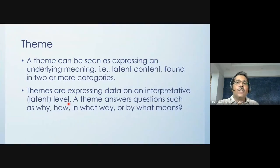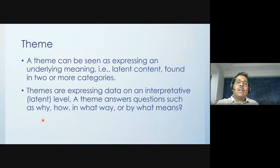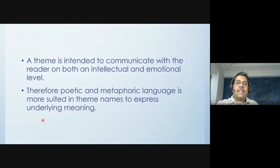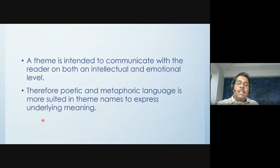Categories are internally homogenous and externally heterogeneous — they appear different on the surface but have an internal association. Themes, on the other hand, look for the latent content. If we have two or more categories, we can see some kind of theme across them. Themes express data at a more abstract and interpretive level, answering questions like why, how, and by what means — describing the underlying meaning of the content. Themes connect with the reader at both an intellectual and emotional level, using poetic and metaphoric language.